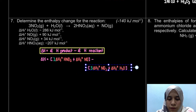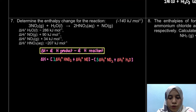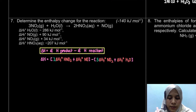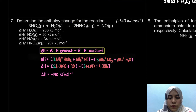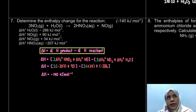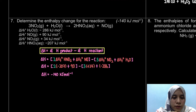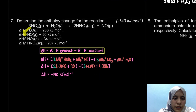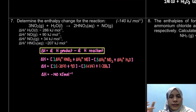For the reactant side: there are 3 moles of NO2, so write 3 times the enthalpy of formation of NO2, plus the enthalpy of formation of H2O. Always check the stoichiometric coefficients in front of each species. Substituting the values straight away gives negative 140 kJ/mol. This type of question can also be solved using the algebraic method — both approaches work when all data are enthalpies of formation.